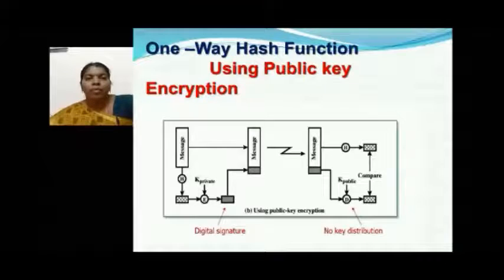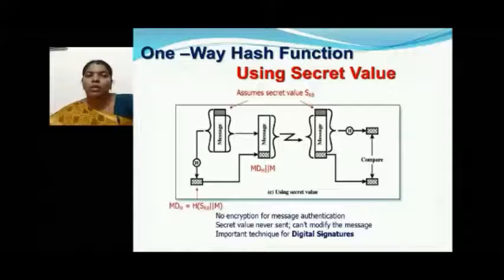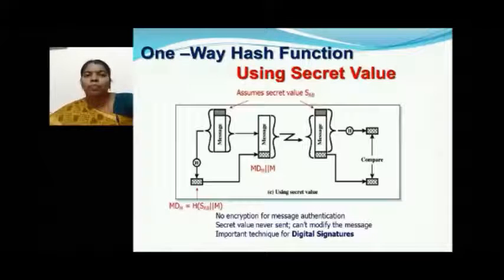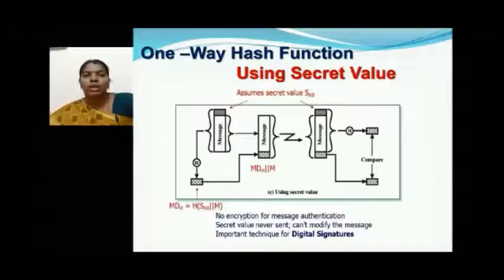The last method is one-way hash function using a secret value. No keys are used; instead, a secret value is concatenated with the message. This entire block is hashed to generate a hash value, which is attached to the message and transmitted. At the receiver end, the message and the secret value are again passed to the hash function to generate a hash value. The attached hash value and the generated hash value are compared to verify message authentication and confirm the message is original and unaltered.